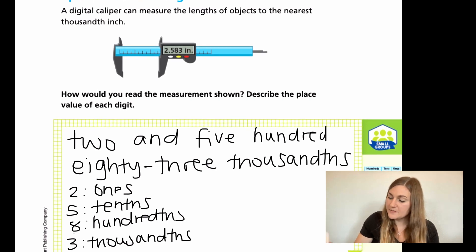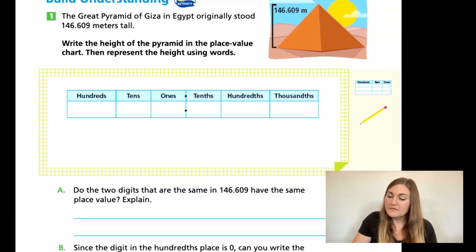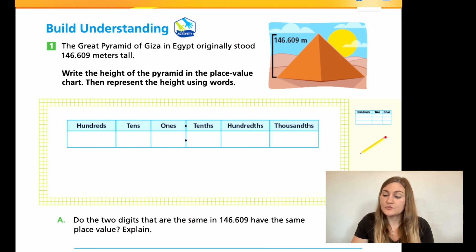Alright, let's go ahead and flip the page. We have a problem, number 1, that says, The Great Pyramid of Giza in Egypt originally stood 146 and 609 thousandths meters tall. You do want to practice saying it correctly. So the bold says, write the height of the pyramid in the place value chart. Then represent the height using words. So go ahead and fill in that chart using numbers. Underneath it, write it in word form.